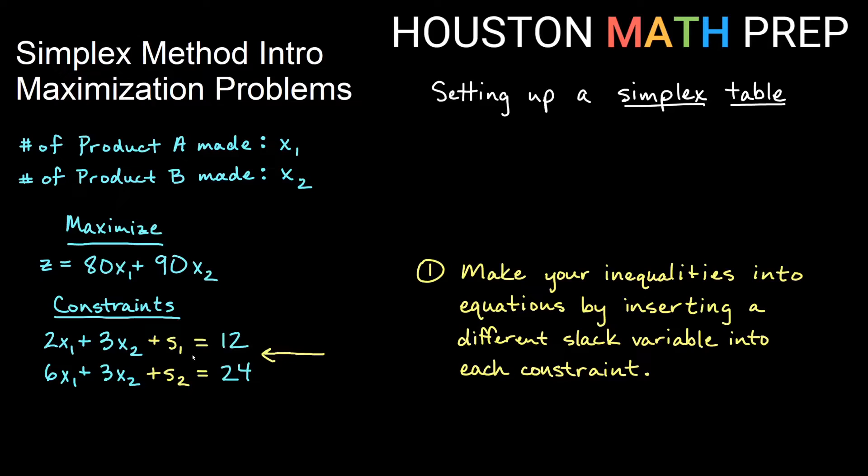Okay, so if we do this, I'm going to call the slack variable that I put in the first inequality to make it an equation, I'll just call it s1 for first slack variable. In the second constraint, I'll call it s2 for second slack variable. So we've done that and we've now considered them to be equations.